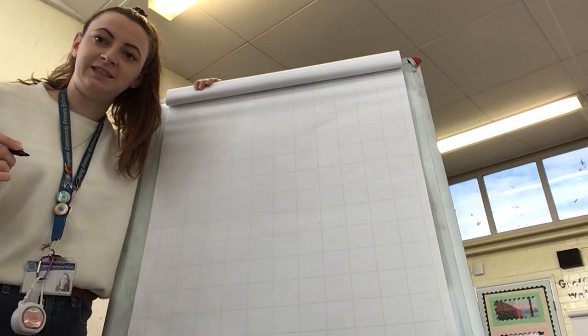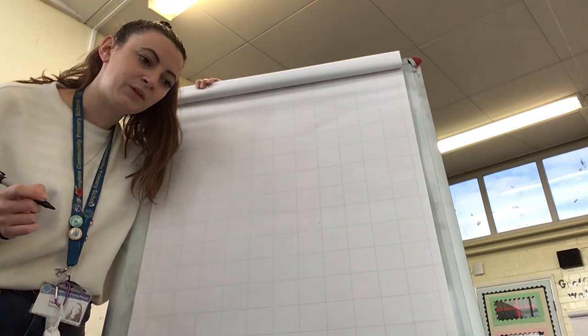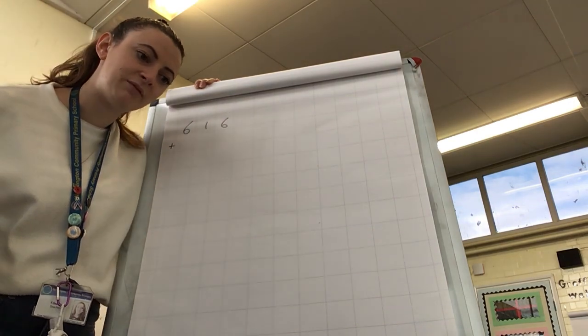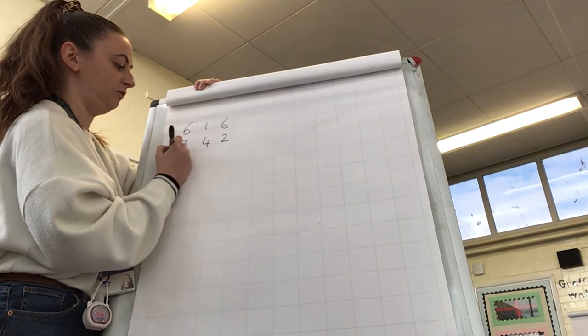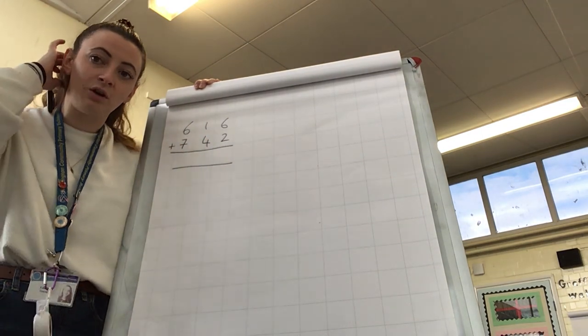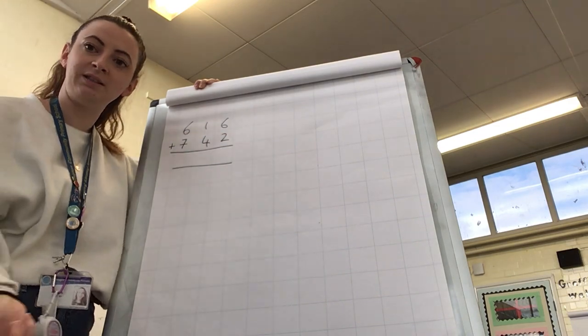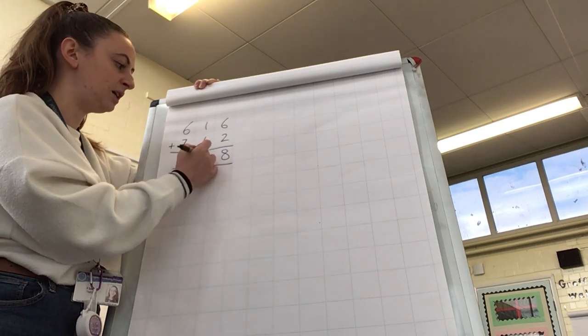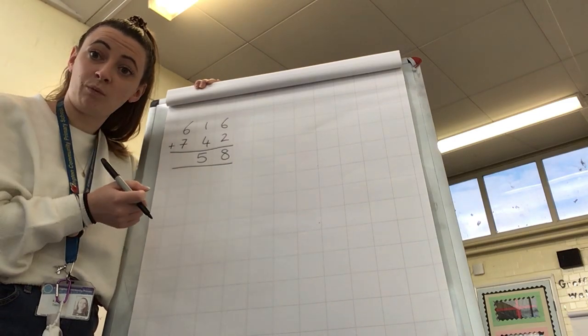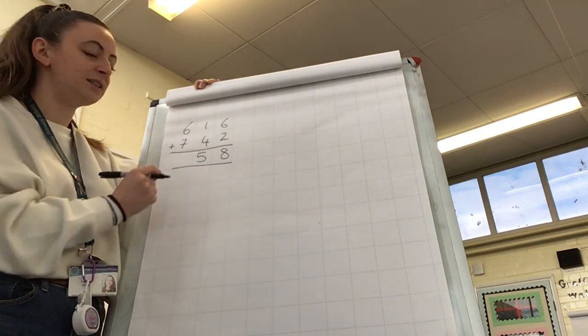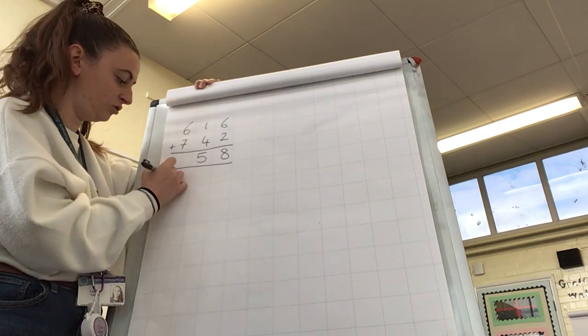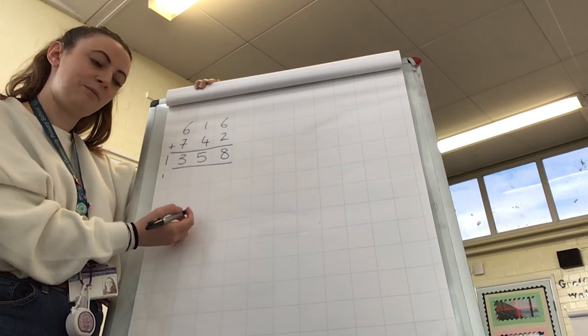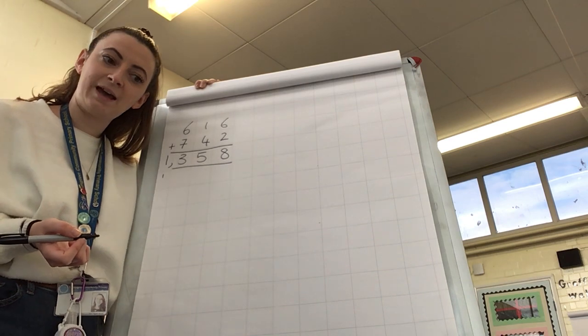Question number 5 is an addition problem, so we're going to use the column method for this one. We have got 616, and we are adding 742. So we're going to start off with our ones column, as we usually would. 6 ones plus 2 ones equals 8 ones. We're then going to move on to our tens columns. 1 ten plus 4 tens equals 5 tens. And then finally, in our 100s column, 600s plus 700s is 1300s. And because there's nothing else to add here, we would just put that one there straight away. So the answer to number 5 is 1,358.